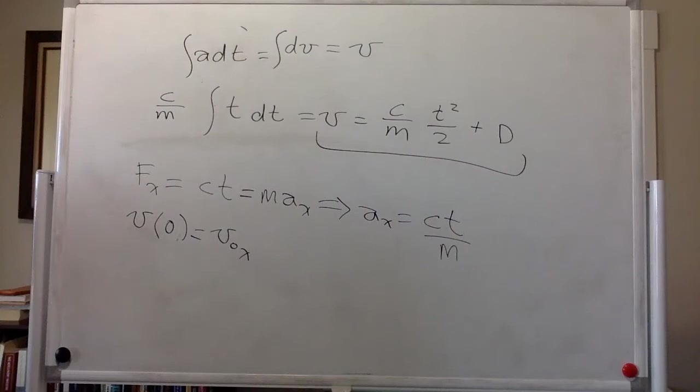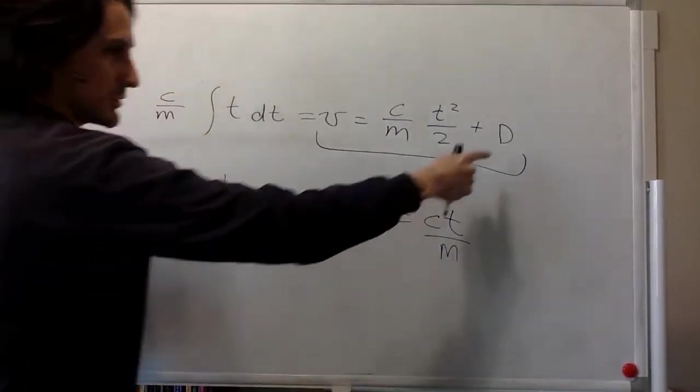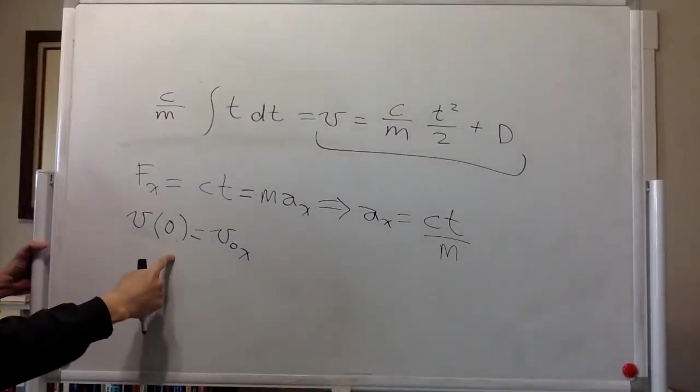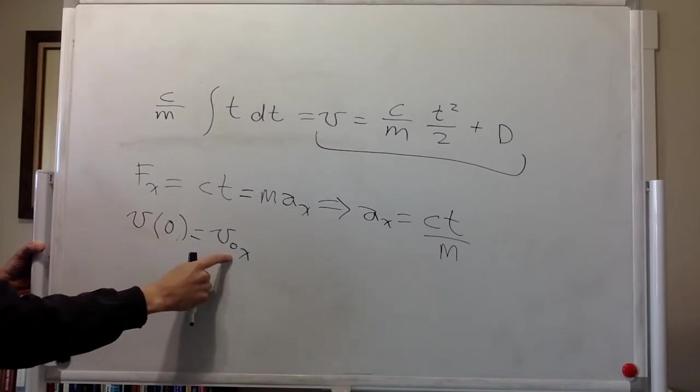So the other piece of information that we have, and we can use it to find the value of d, we know that the velocity at time equals 0 seconds is this.